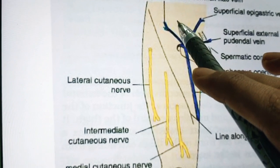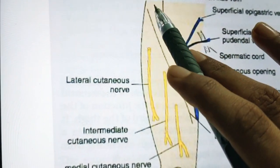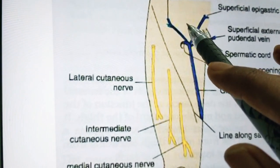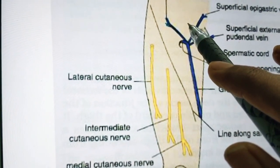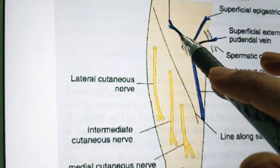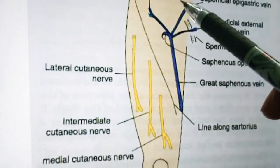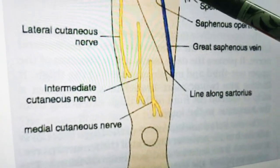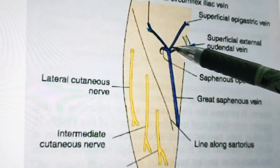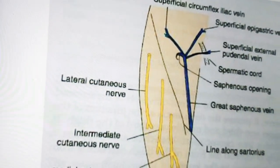The mid-inguinal point lies midway between the anterior superior iliac spine and pubic symphysis. Beneath the mid-inguinal point, you can feel the femoral artery and also the head of the femur. So both the femoral artery and the head of the femur bone can be felt at this mid-inguinal point.